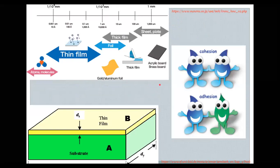Let us start the topic of thin film. Before we discuss the overview of vacuum techniques, you should keep in mind what is meant by thin film — how it behaves, how it is obtained, what its dimensions are, and what its exact size is. Looking at the first figure, this figure indicates the ranges of matter.